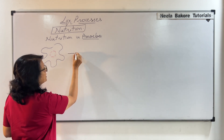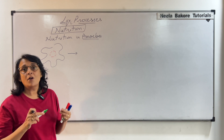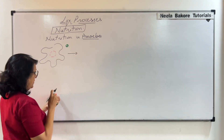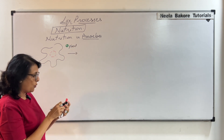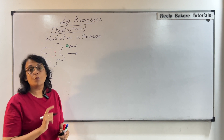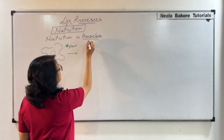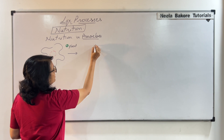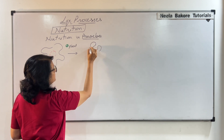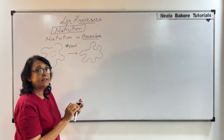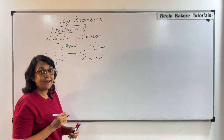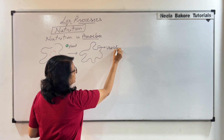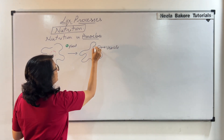How is amoeba going to take its nourishment? Suppose it comes in contact with a food particle. Amoeba wants to engulf it because it follows holozoic mode of nutrition. Amoeba creates a depression around the food particle. This depression is known as a vesicle, and the food particle comes inside it.